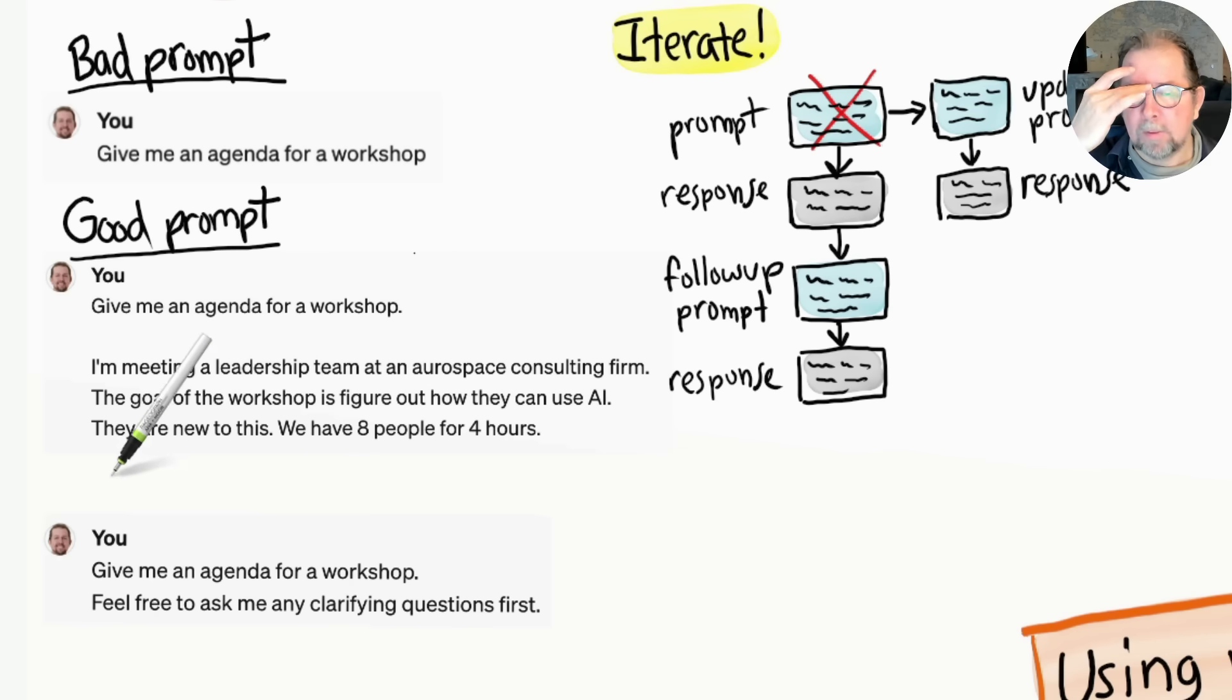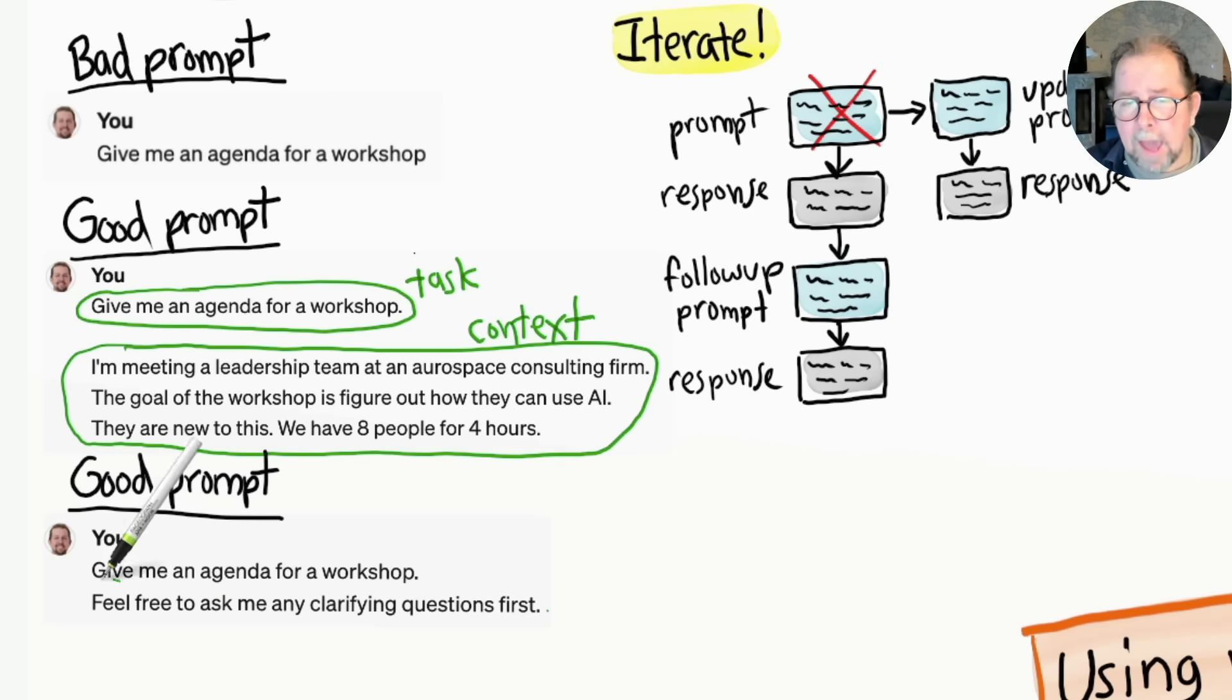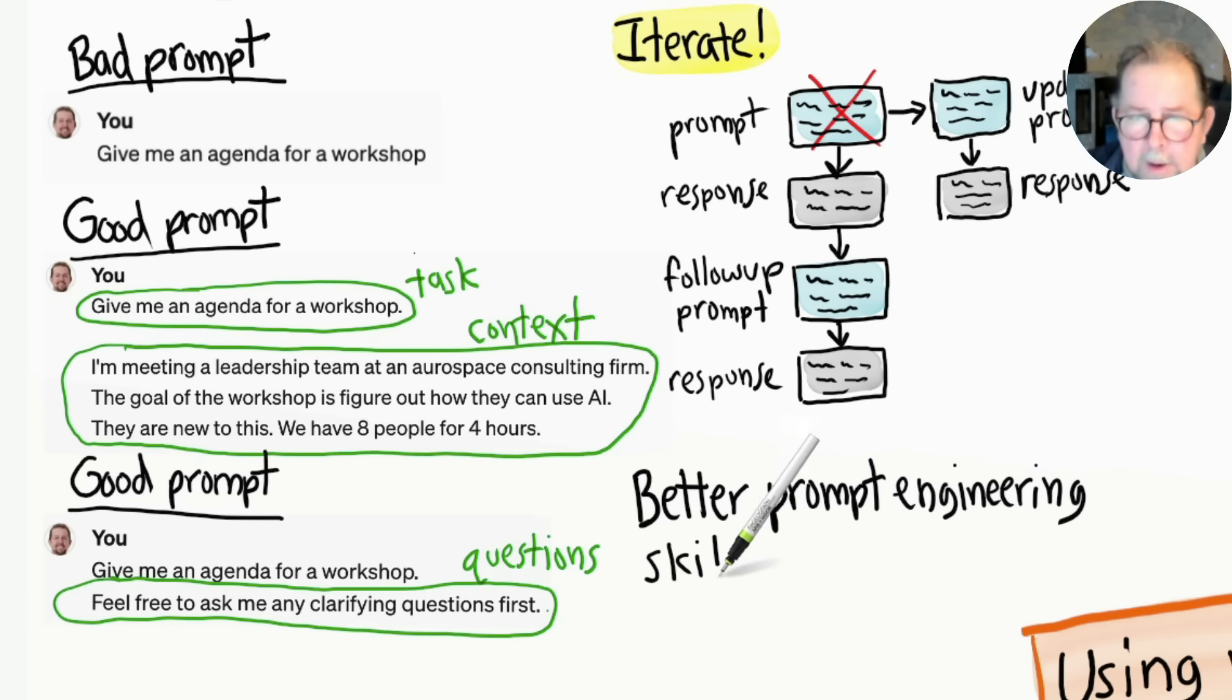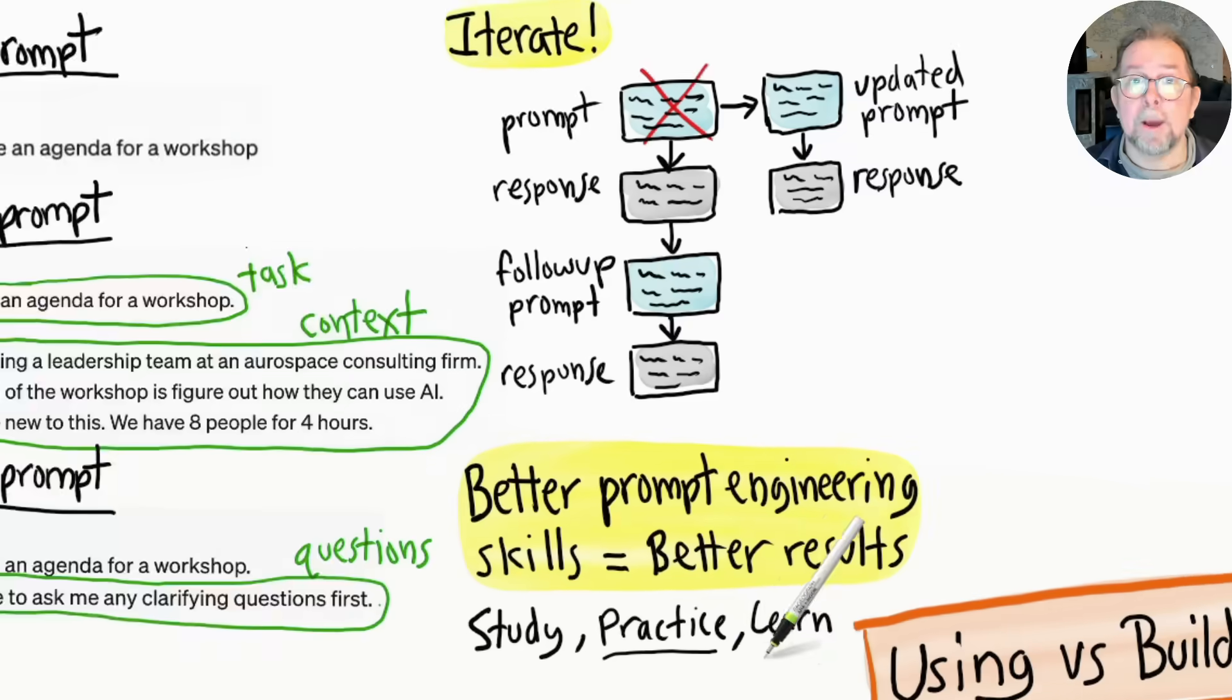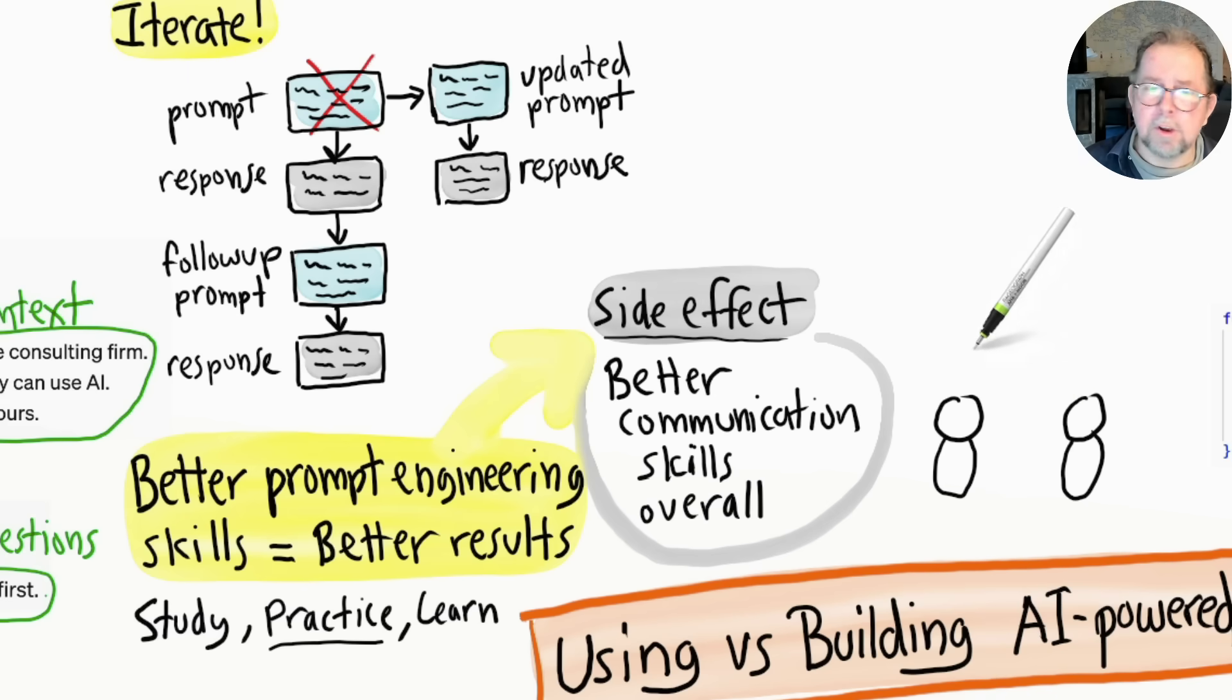In this third approach, I ask it to interview me. So instead of me providing a bunch of context up front, I'm basically saying 'what do you need to know in order to help me?' and then it will propose a workshop agenda after. I often combine these two: I provide a bit of context and then I tell it to ask me if it needs any more information. These are just some examples of prompt engineering techniques. Overall, the better you get at prompt engineering, the faster and better results you will get from AI. There are plenty of courses, books, videos, articles to help you learn this, but the most important thing is to practice and learn by doing. A nice side effect is that you will become better at communicating in general, since prompt engineering is really all about clarity and effective communication.